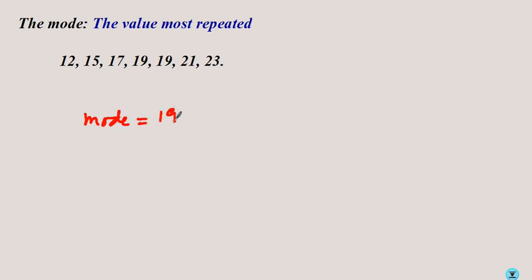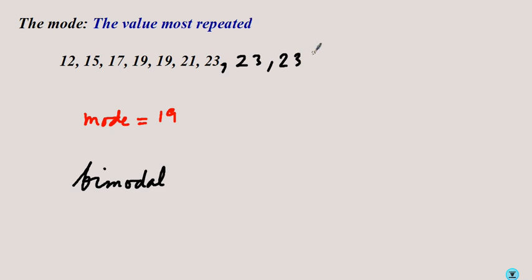The mode is the easiest to evaluate — it is the value that is most repeated. In this data set, 19 appears twice and every other value appears once, so the mode equals 19. If we also had two 23s, we'd have two 19s and two 23s — we'd say the data is bimodal, with modes 19 and 23. However, if there were three 23s compared to two 19s, there would be one mode: 23.